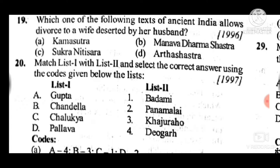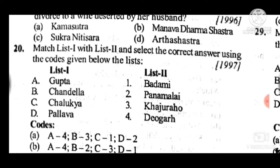Question 20 answer is A. The matching of dynasties and monuments: Gupta — Yoga; Chandela — Khajuraho; Chalukya — Badami; Pallava — Panamalai.